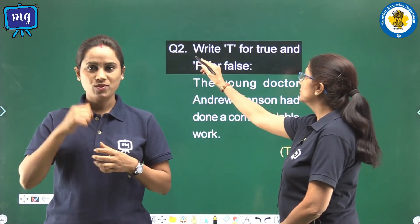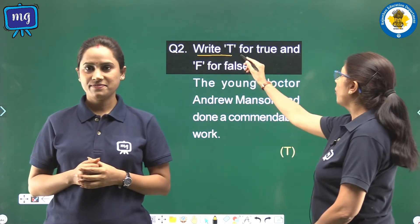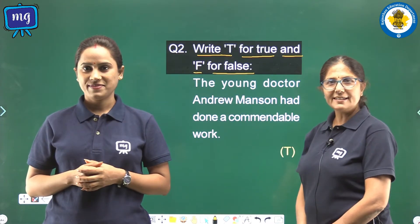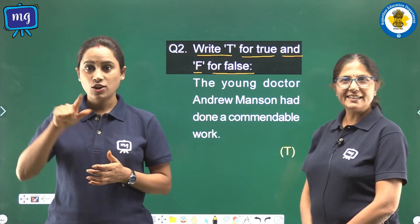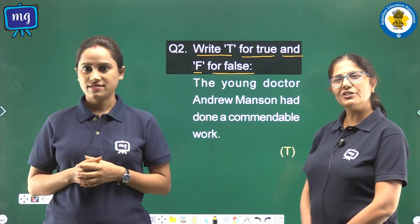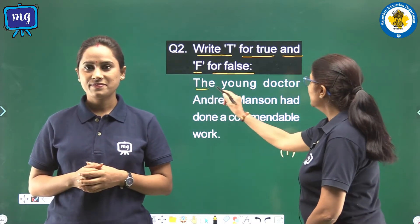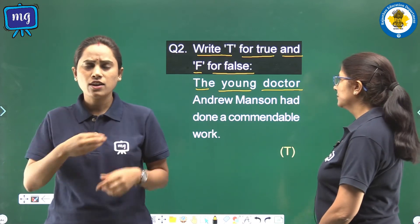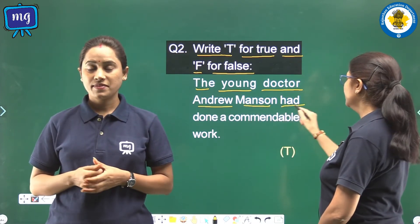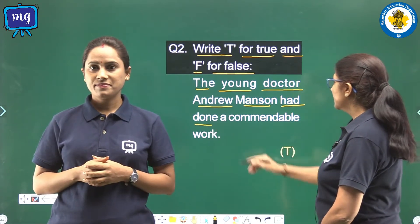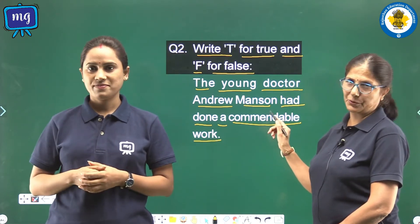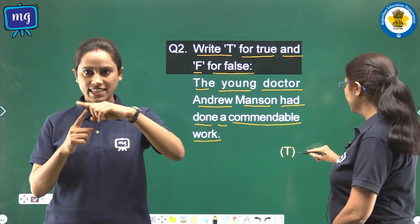Question number 2: Write T for True and F for False. Students, in this question you will write T for a correct sentence or F for a wrong sentence. The young doctor Andrew Manson had done a commendable work. It is true, so we shall write T in the bracket.